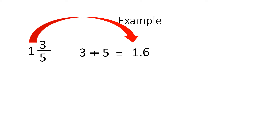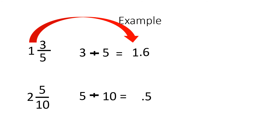Here we have another example, 2 and 5 tenths. Once again, the top number, which is 5, we divide it by the bottom number, which is 10. The answer will be 0.5. Then we take this 2 and we carry it over and write it in front of, or before, the decimal. 2.5.